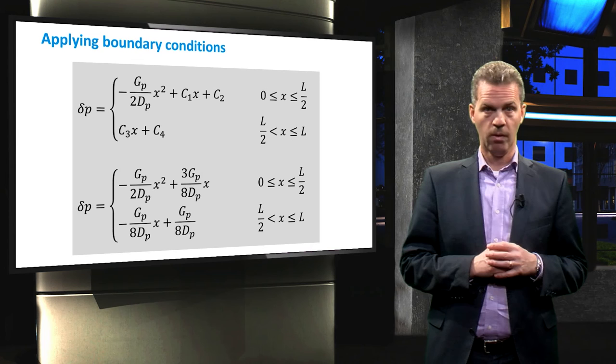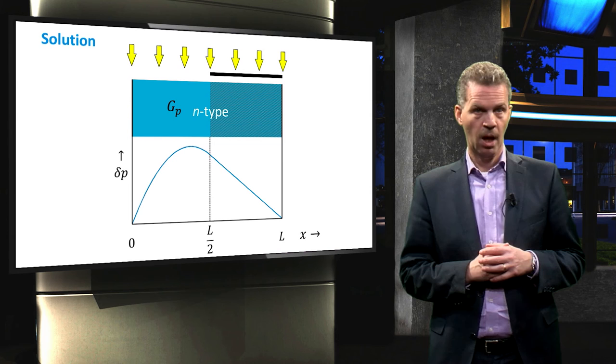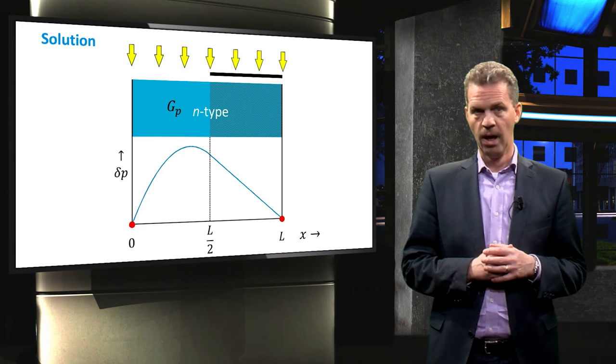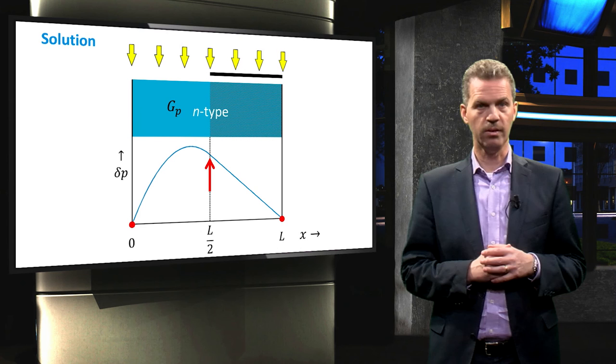Now we have the final solution. We can analyze it further by plotting it, resulting in the following graph. We see that at the edges the excess carrier concentration is indeed zero. And at the interface between illumination and shading,